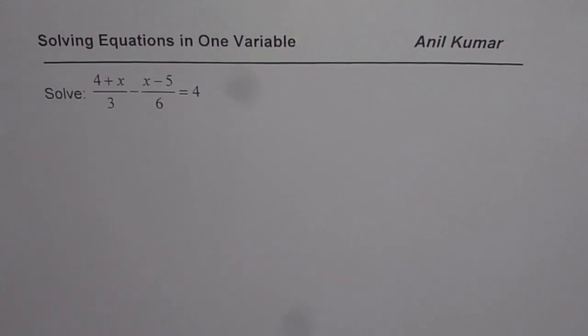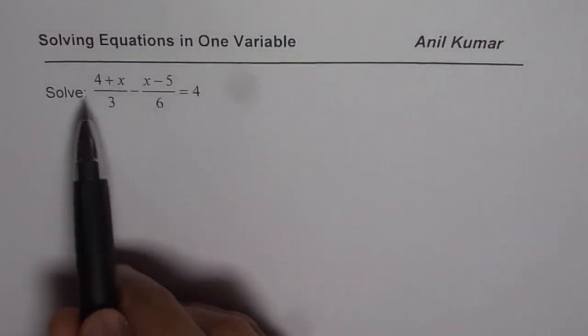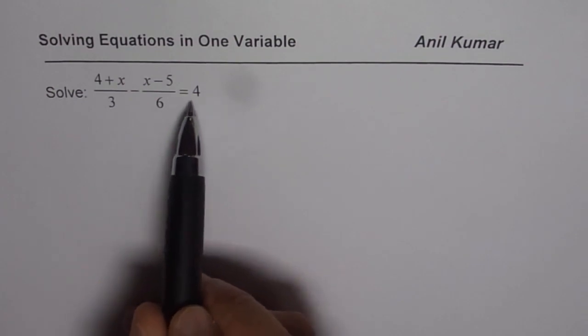I'm Anil Kumar and in this video we will learn the strategy to solve linear equations with one variable. Now here we have fractions involved. The equation is (4+x)/3 - (x-5)/6 = 4.